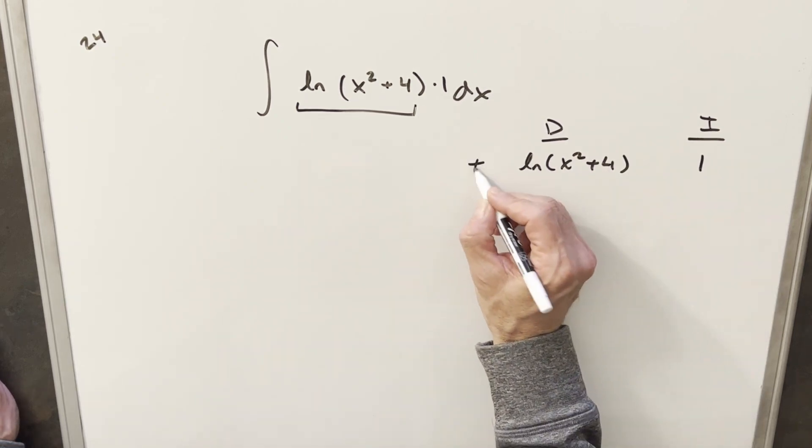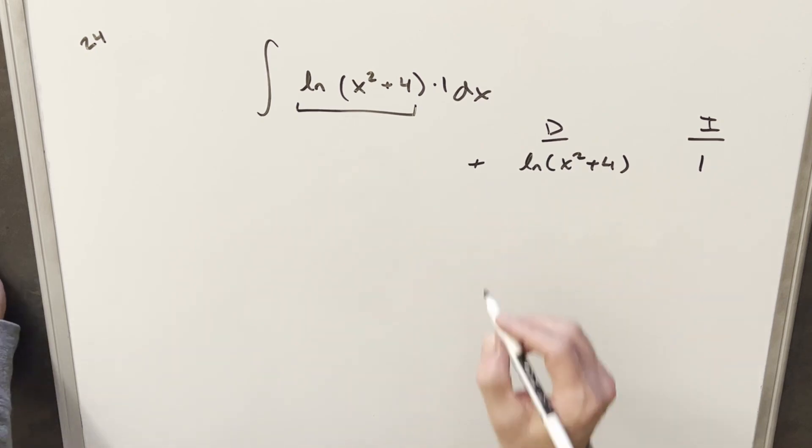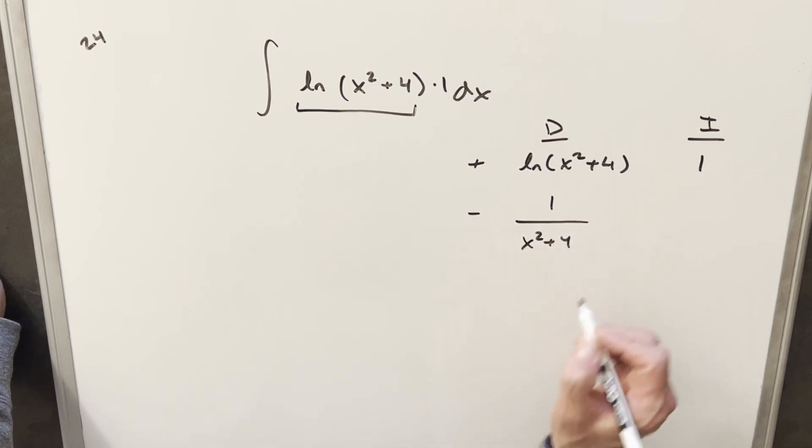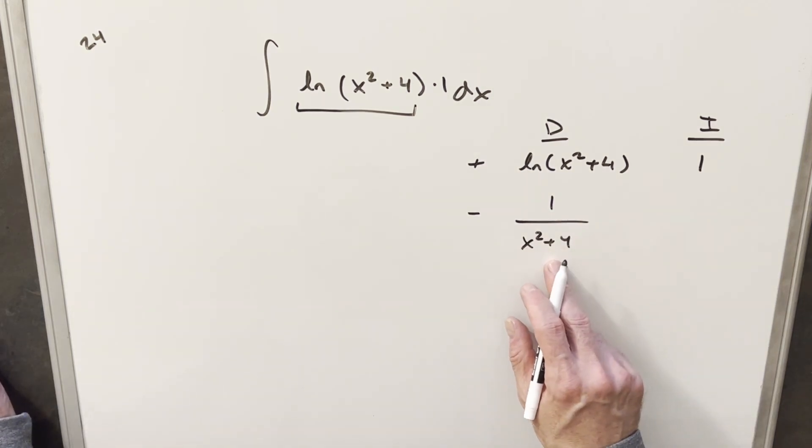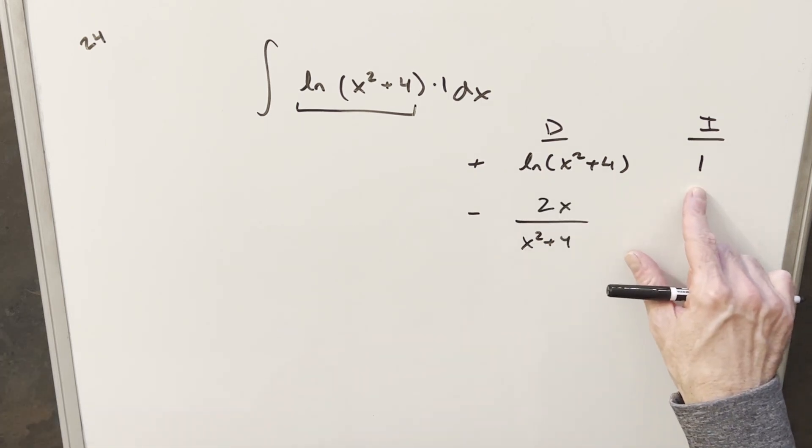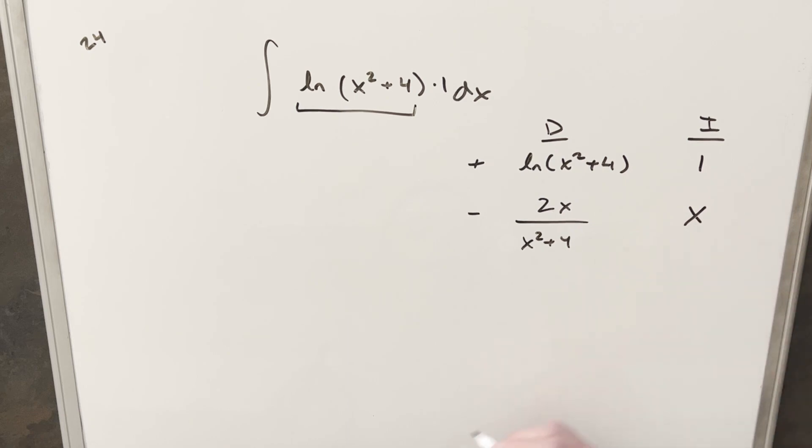So we're going to have alternating signs here. For the second row, we'll have a minus. We'll differentiate this thing. We're going to get 1 over x squared plus 4, and then chain rule on this. We'll take the derivative of x squared plus 4, and we get 2x. Now from here, we'll integrate 1. Integral of 1 is going to be just x.